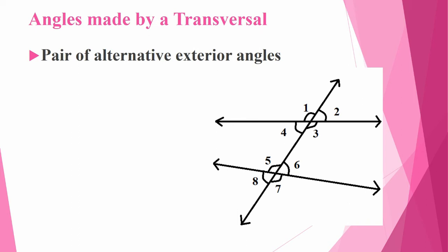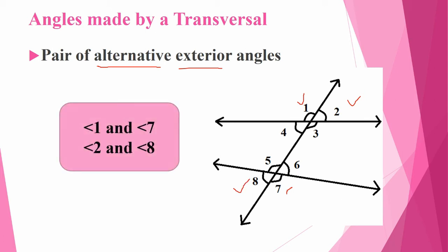Next, pair of alternative exterior angles. Exterior angles means outside — that is 1, 2, 7, 8. Alternative means for 1, the opposite is 7, and for 2, the opposite is 8. So we can write: angle 1 and angle 7, then angle 2 and angle 8.